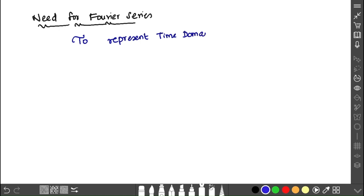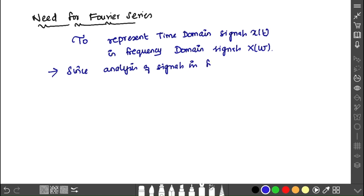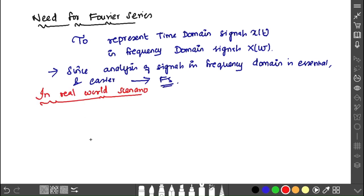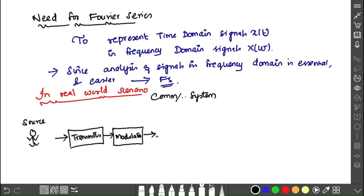Need for Fourier series: To represent a time domain signal, that is X(t), we need to convert it into frequency domain, X(ω)—that is the main purpose. Signal analysis can be done in terms of frequency domain.